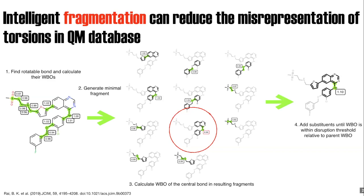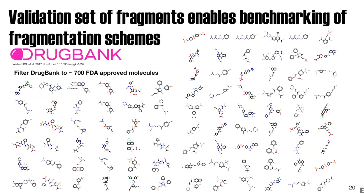We start building out around the bond until we reach a Wiberg Bond Order within the disruption threshold. To determine what disruption threshold to use, I generated a benchmark set by filtering DrugBank based on size and other properties, arriving at around 700 FDA-approved molecules. I then performed an exhaustive fragmentation—generating every possible fragment from each molecule without fragmenting rings.